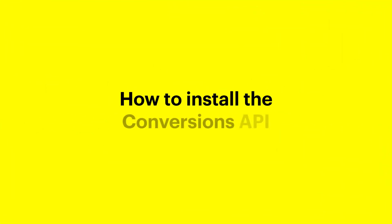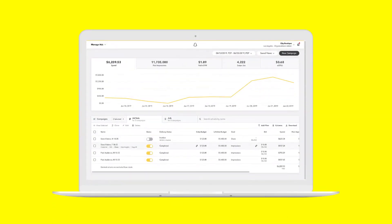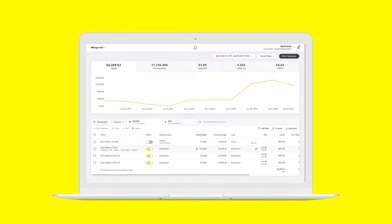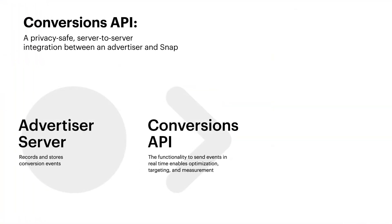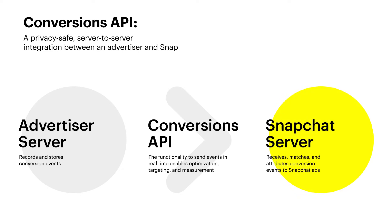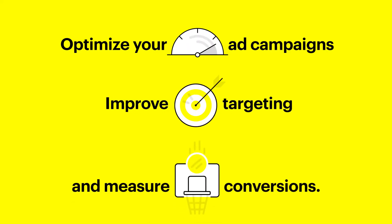In this video, we'll walk through how advertisers can improve Snapchat campaign measurement and performance through our first-party system, Conversions API. The Conversions API gives you a direct way to pass web, app, and offline events to Snap through server-to-server integration. This will ultimately allow you to better optimize your ad campaigns, improve your targeting, and measure conversions all within Snapchat Ads Manager.